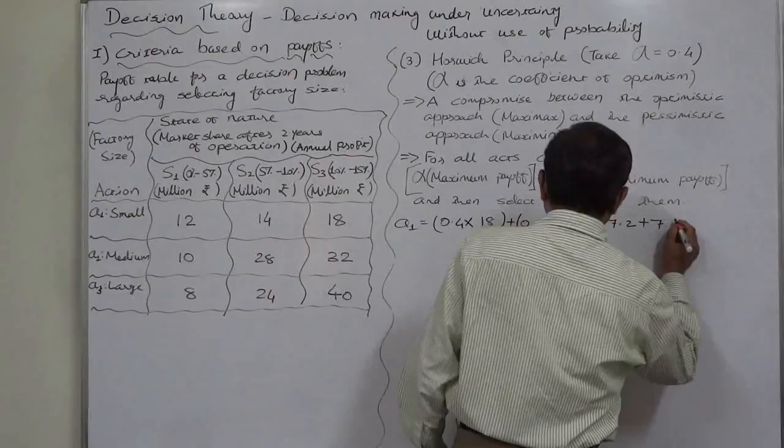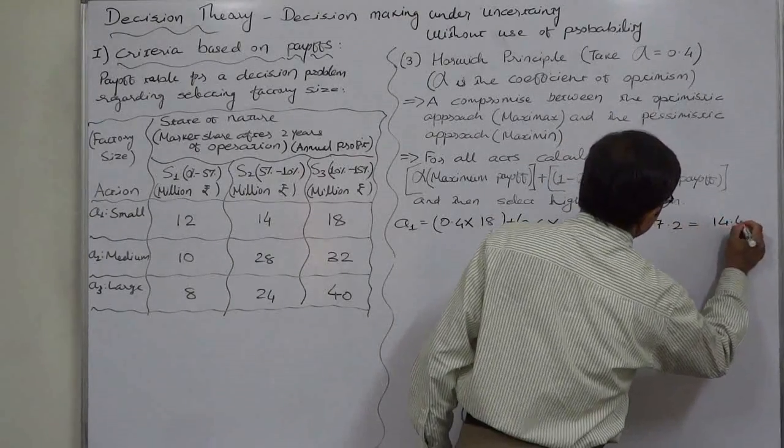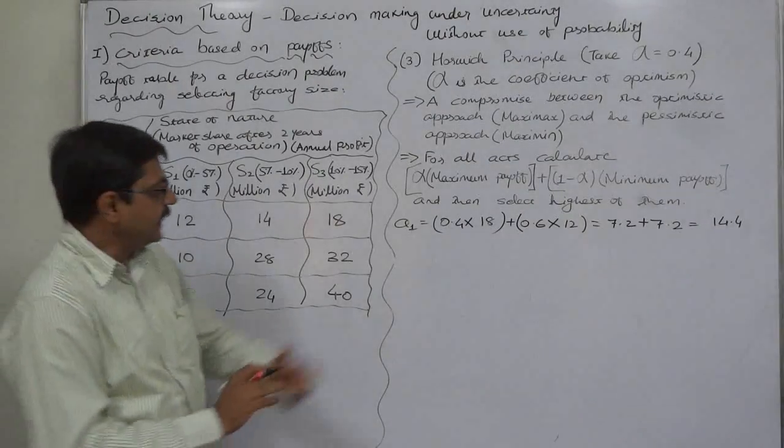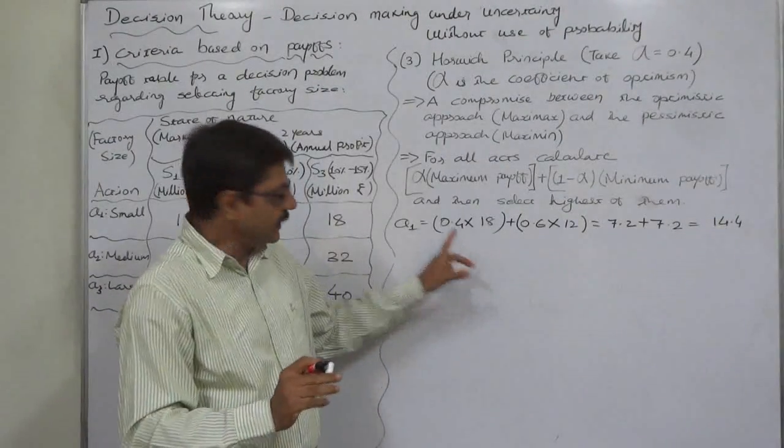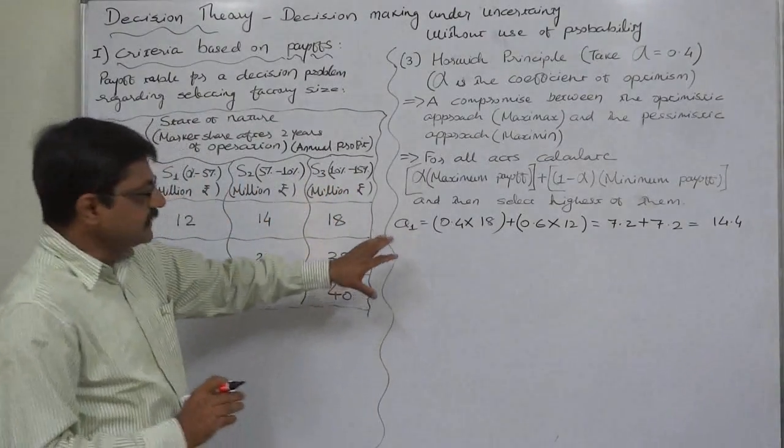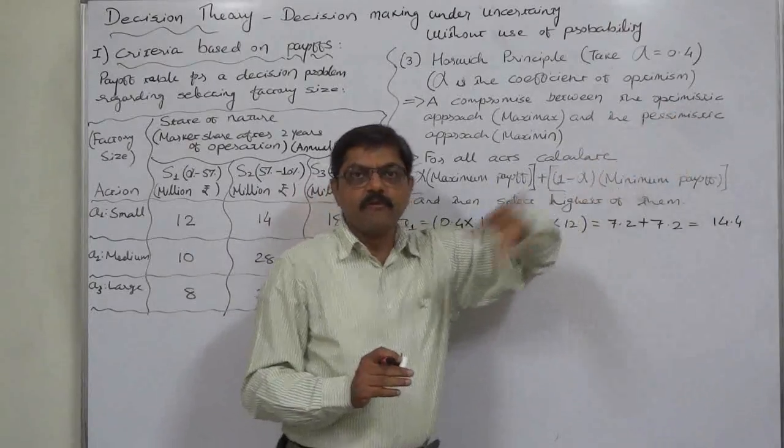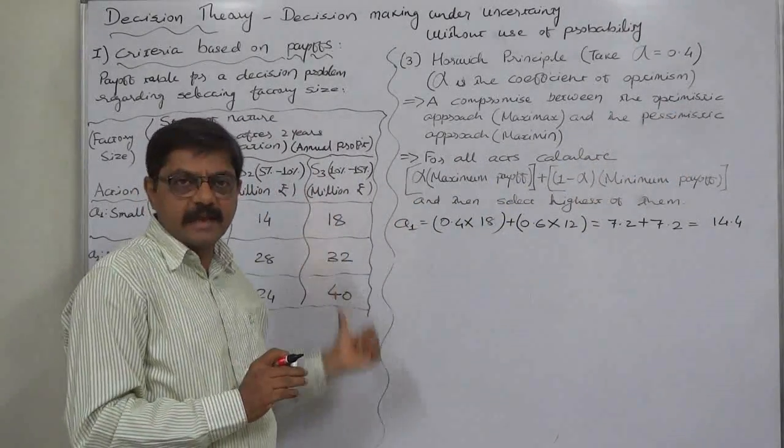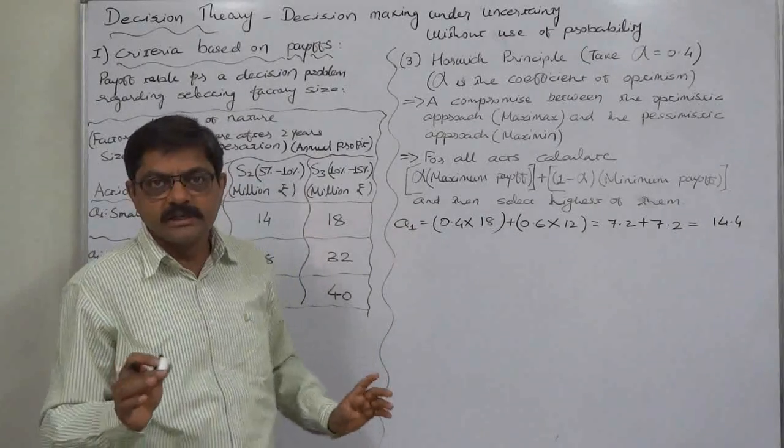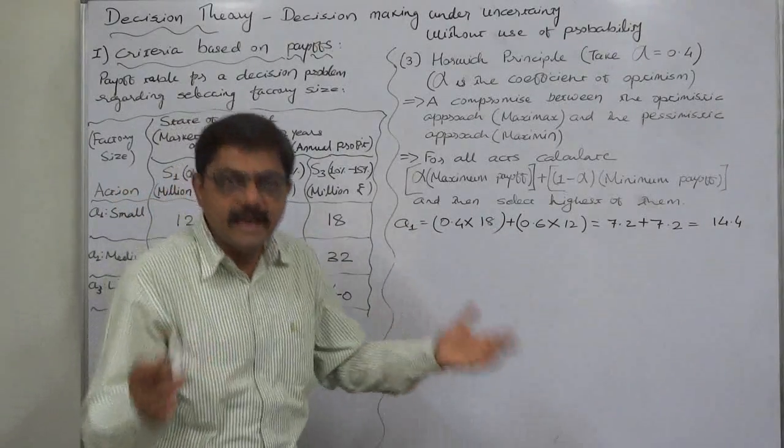So 0.4 into 18 equals 7.2, plus 0.6 into 12 equals 7.2, ultimately 14.4. This is somewhat like expected value x into p of x, but here the probability is subjective. If X is the decision maker, alpha can be 0.4; if Y becomes the decision maker, alpha can be different; if Z becomes the decision maker, alpha can again be different.